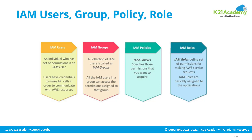An IAM role is a set of permissions that you can apply so that requests can be made to AWS services — accessing, deleting, creating, or editing resources. That role can be assigned to a user, a group, an application, or a service itself. The major difference between a user and a role is that a user has credentials — a key, password, or login — whereas a role is just a set of permissions; you don't log in through a role.